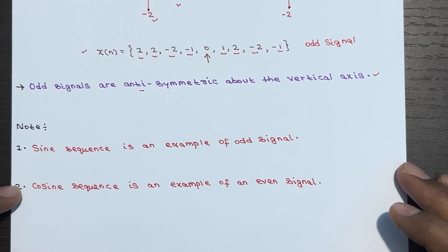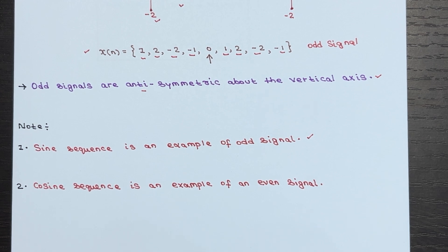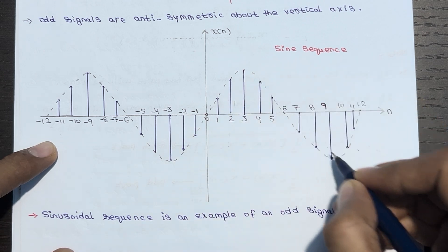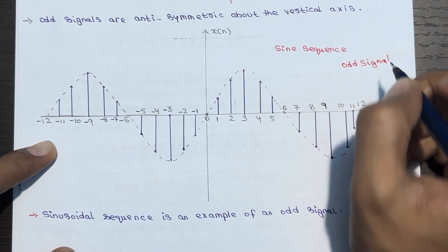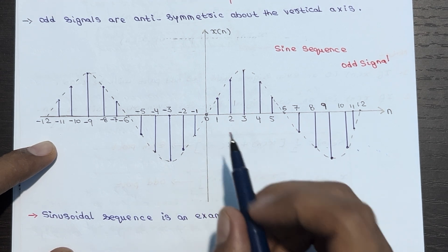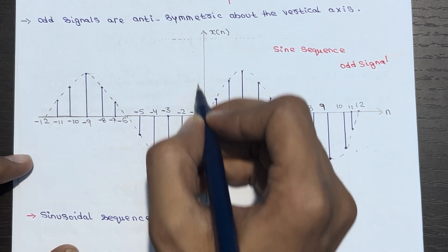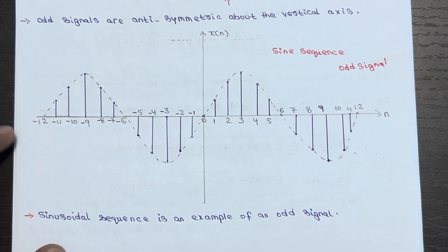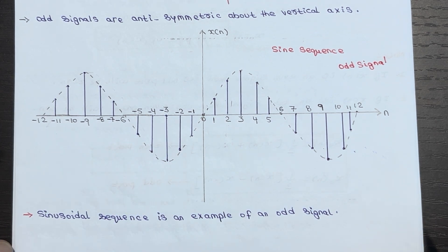A sine sequence is an example of an odd signal. Let me show you the sinusoidal sequence so you understand this better. This is a sinusoidal sequence and it is an odd signal. It is anti-symmetric about the vertical axis. If it were symmetric, the behavior on both sides would match, but it is opposite — first fold like this, and whatever behavior you get, fold again — this is anti-symmetric behavior.